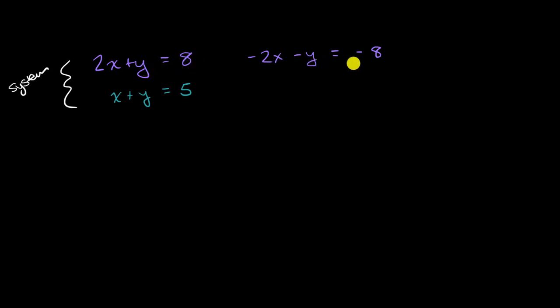And so this equation on the right, this purple equation, is an equivalent equation to our original one. It looks different, but the same x, y pairs that satisfy this right equation are going to satisfy this left equation and vice versa.